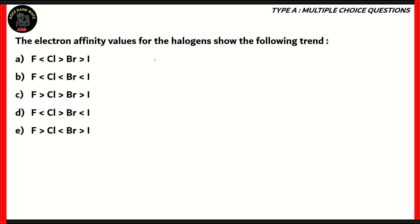Let's look at another question. The electron affinity values for the halogens show the following trend. Is it F less than Cl greater than Br greater than I? F less than Cl less than Br less than I? F greater than Cl greater than Br greater than I? F less than Cl greater than Br less than I? Or F greater than Cl less than Br greater than I? These are the five options.